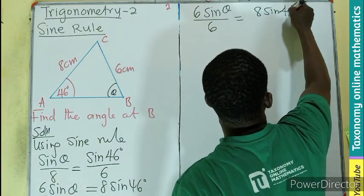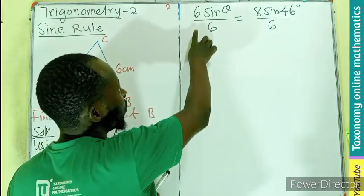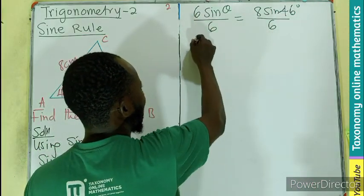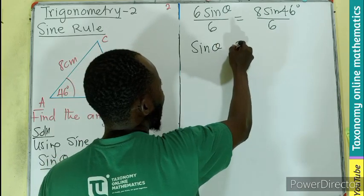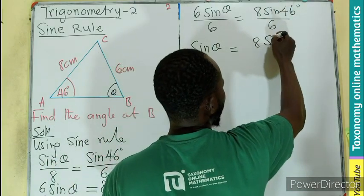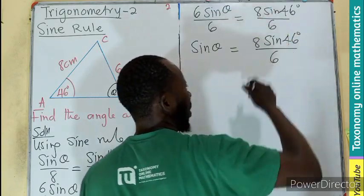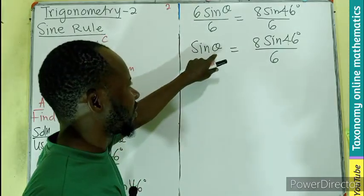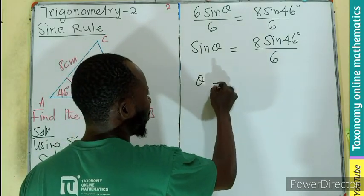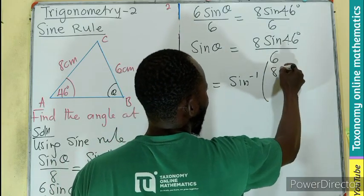Equals 8 sine 46 degrees divided by 6. So from here the 6 will cancel, leaving us with sine theta equals 8 sine 46 over 6. We can leave it this way.